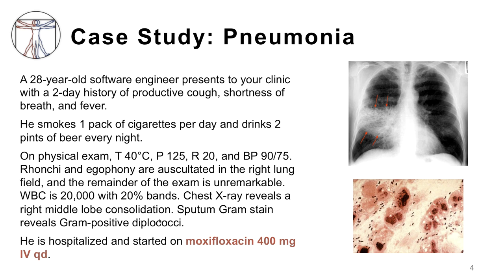On physical exam, his temperature is 40 degrees Celsius, which is high. Pulse is 125, also high. Respiratory rate is high at 20 breaths per minute, and his blood pressure is probably low for him at 90 over 75. Ronchi and egophony are auscultated in the right lung field. His peripheral white blood cell count is 20,000 with 20% bands, indicative of a potential infection. Chest x-ray reveals a right middle lobe consolidation.